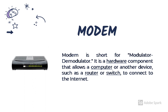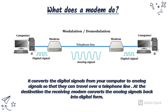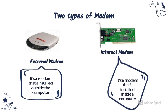The next networking device is a modem, which is short for modulator and demodulator. It is a hardware component that allows a computer or another device such as a router or switch to connect to the internet. A modem links your home network to the internet through your ISP, that is your internet service provider. It converts the digital signals from your computer to analog signals so that they can travel over a telephone line. At the destination, the receiving modem converts the analog signals back into digital form. There are basically two types of modem: an external modem and an internal modem.